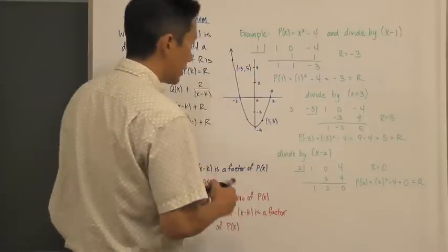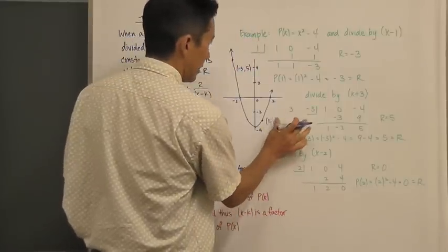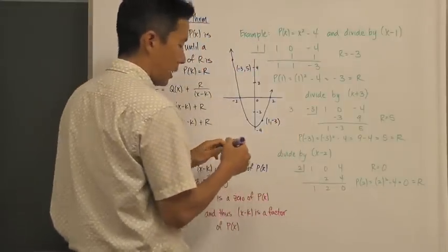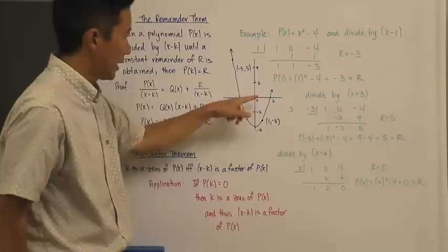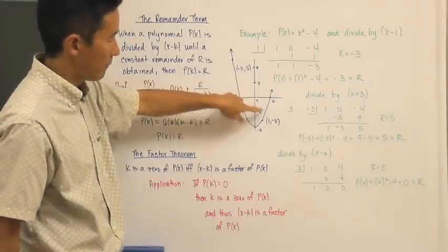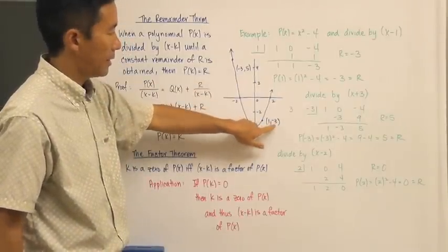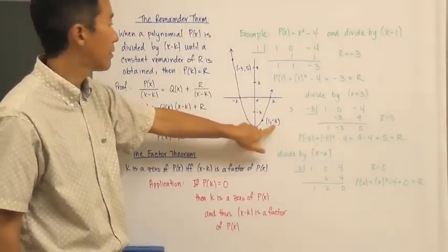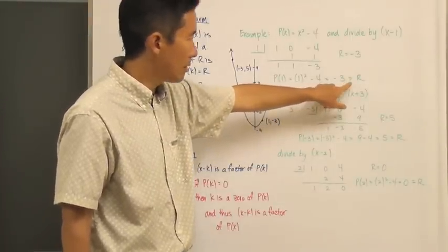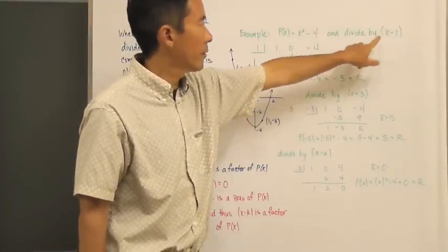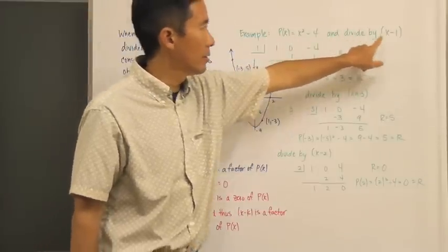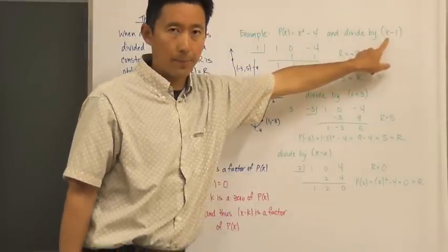Looking at this graph, if we take the value of the function at x = 1, the y-value is negative 3, which is exactly the same as the remainder when we divide this polynomial by that factor.